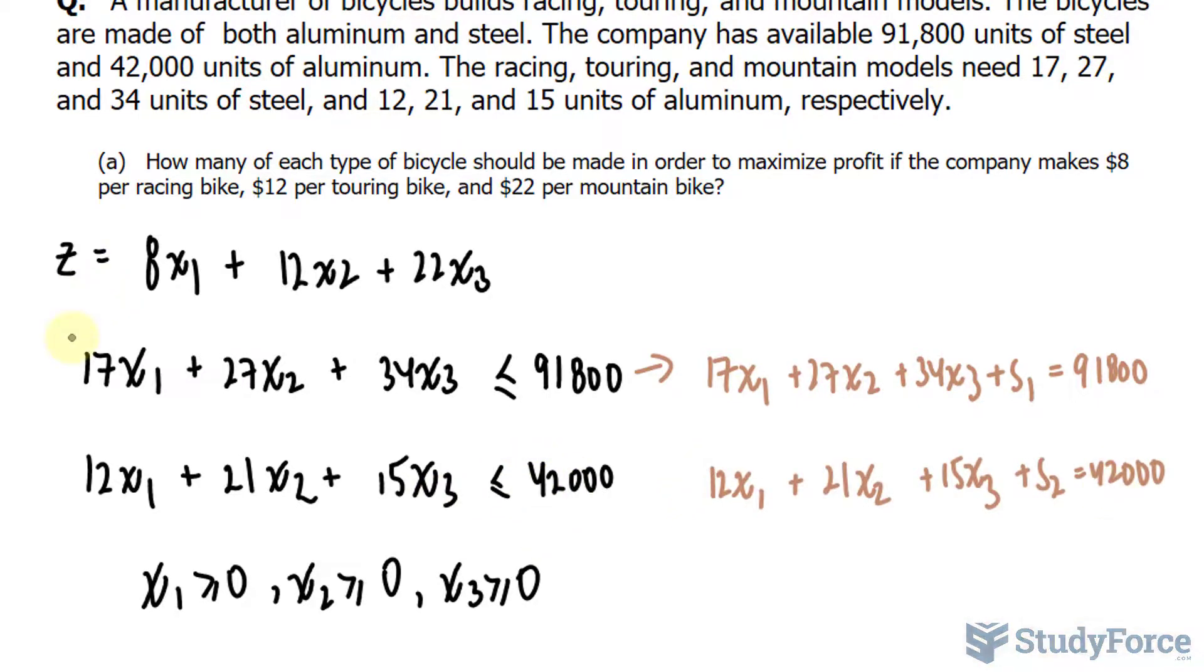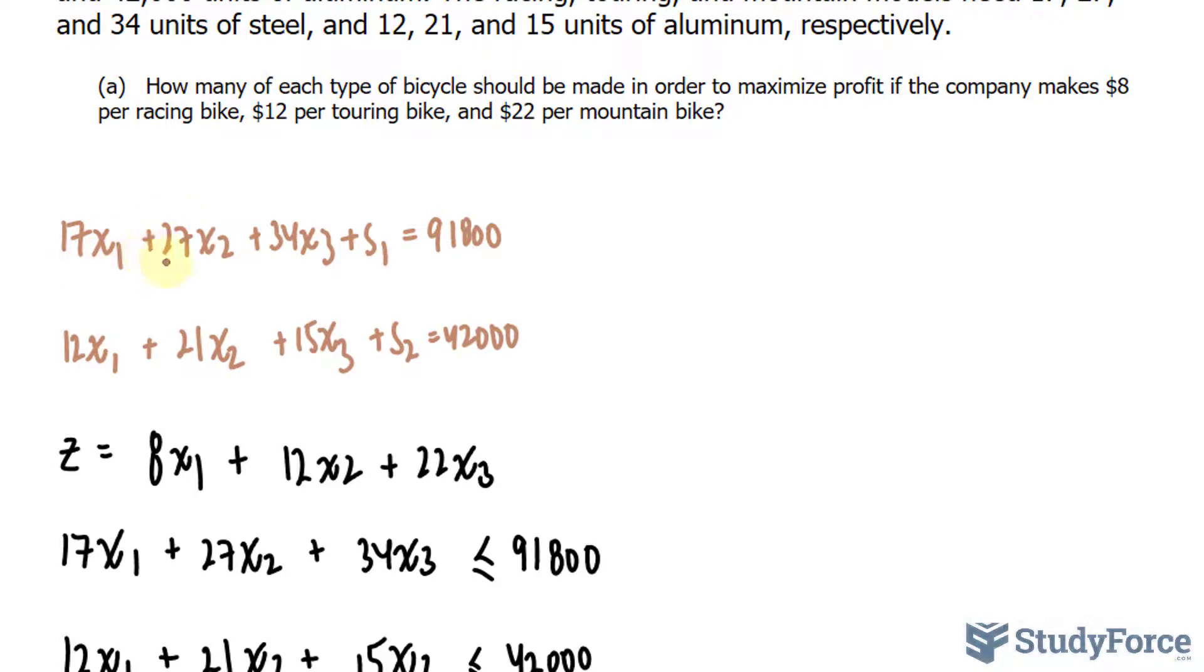Of course, since the objective function is an equation, you don't need to introduce a slack variable for that. For the following step, what I want to do is change this equation, this one and that one into an augmented matrix. And this augmented matrix will serve as our initial simplex tableau. This will help us organize our work and help us find what we're looking for. Starting with this equation, I'm going to rewrite it as 17, 27, 34, 1. There's no S sub 2, so a 0. There's no Z. Introduce another 0 for that column. And our constant is 91,800. For this equation, it becomes 12, 21, 15. There's no S sub 1 here. There is an S sub 2. There's no Z. 42,000.